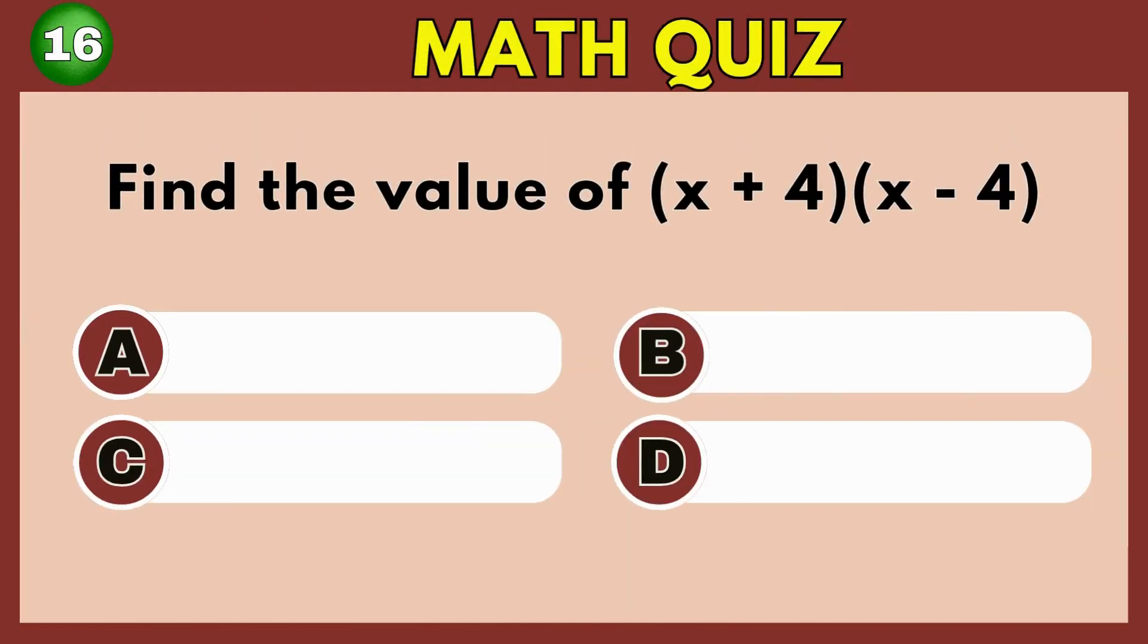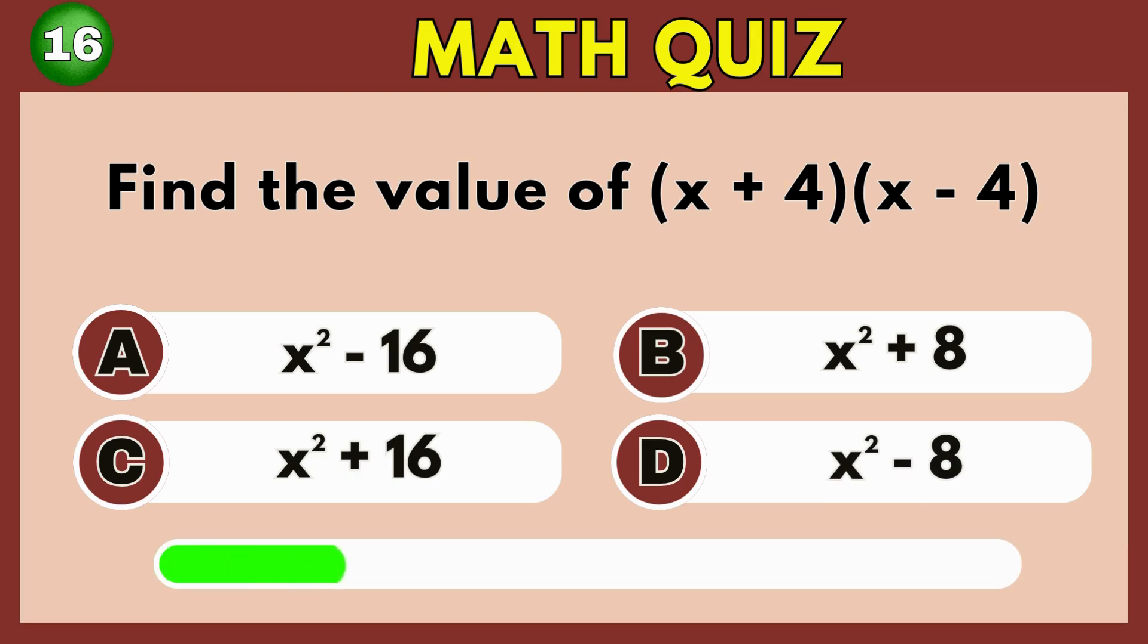What is the result of X plus 4 times X minus 4? Option A. X squared minus 16.